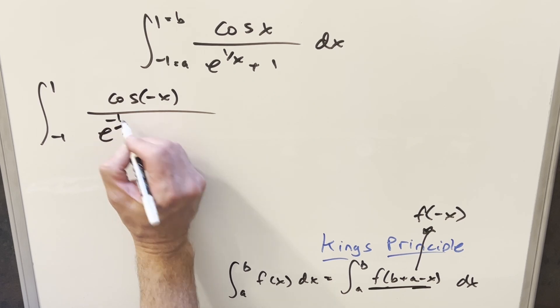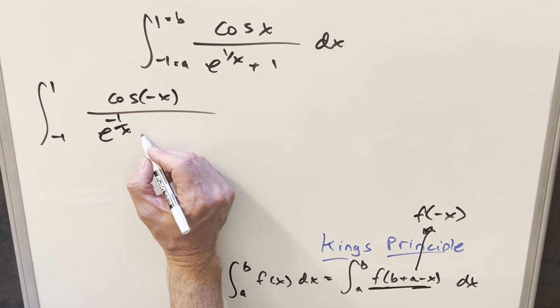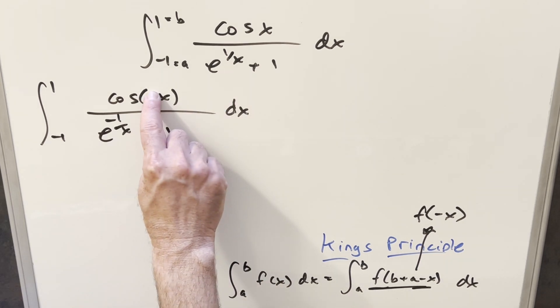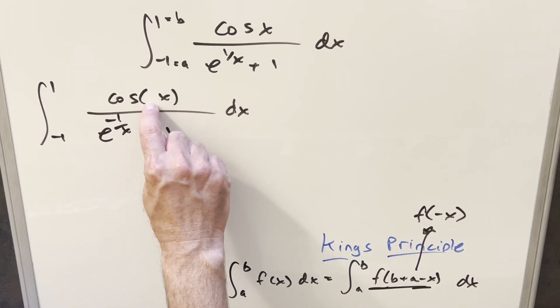I can bring the minus up front like this, e to the minus 1 over x plus 1. But now because cosine is an even function, this minus sign isn't going to do anything, so I can just get rid of that there.